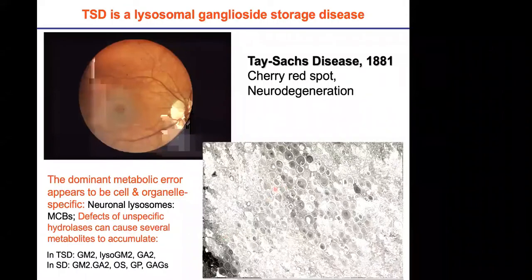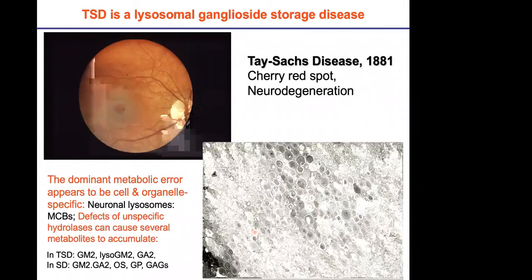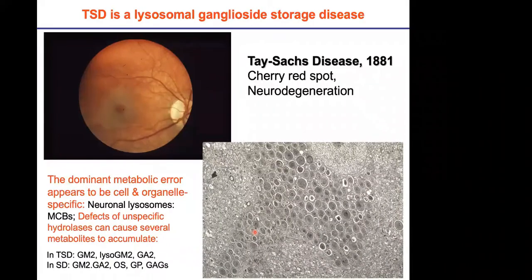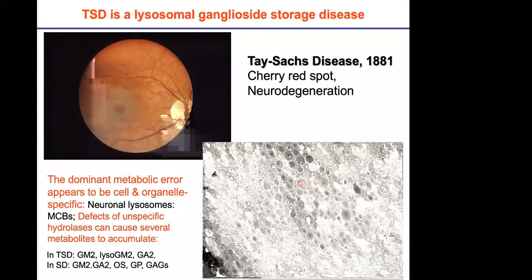Under electron microscopy — Terry did this first — you see the accumulation of these membranous cytoplasmic bodies in the cytosol of this nerve cell. This is the nucleus, and these are lysosomes which cannot degrade the storage material anymore. This is the dominant sub-cellular and cellular space where the disease really dominates. The main storage compound GM2 in these membranous cytoplasmic bodies makes up only 16 percent. All the others are other lipids like phospholipids, other sphingolipids, hydrophobic proteins, and so on.